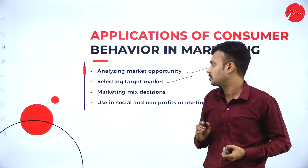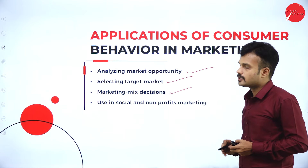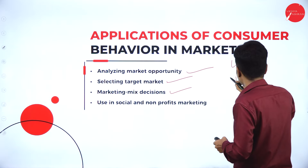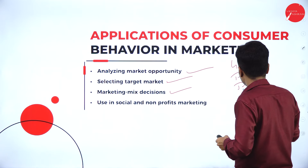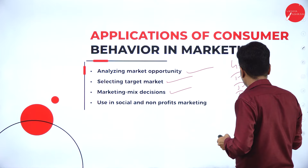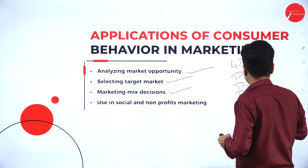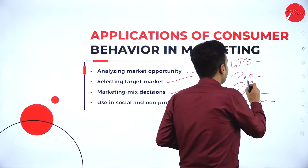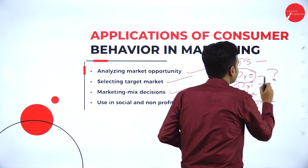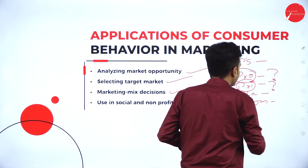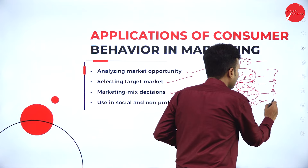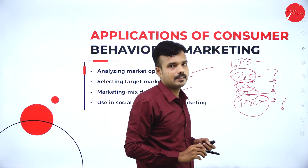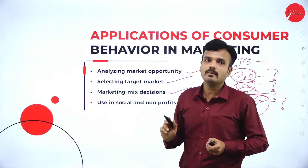The next concept is marketing mix decisions. There are 4 P's in marketing: product, price, place, and promotion. Consumer behavior helps us make decisions regarding which product to manufacture, at what price, at what place to launch it, and which ways to promote it. In fact, consumer behavior gives answers to these marketing mix questions.